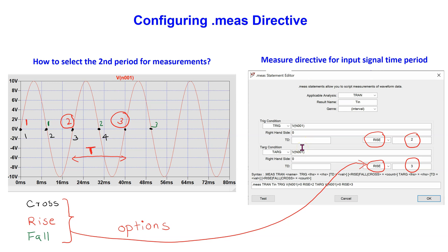We can do this in the measure directive as follows. We select the threshold value for the trig and tag points as 0. We can choose between cross, rise, and fall, and we need to specify the instance each time the value crosses, rises, or falls relative to the threshold. In this figure, the instances are marked in black for cross, red for rise, and green for fall. By choosing rise and 2 for the trig point and rise and 3 for the tag point, we can specify the second period.